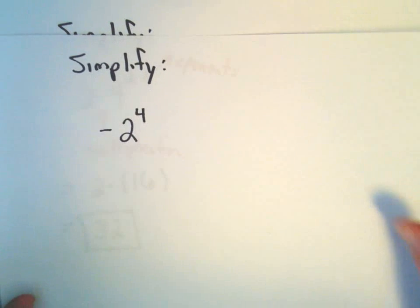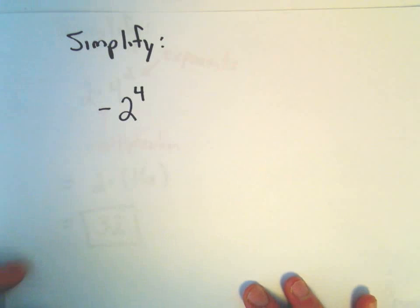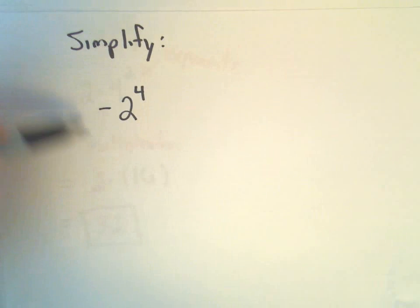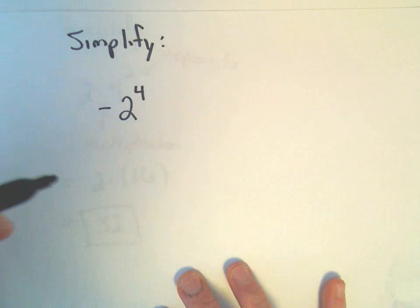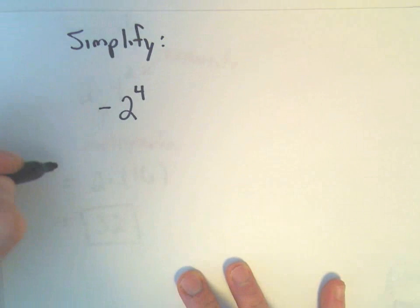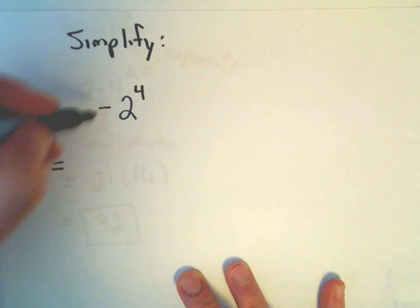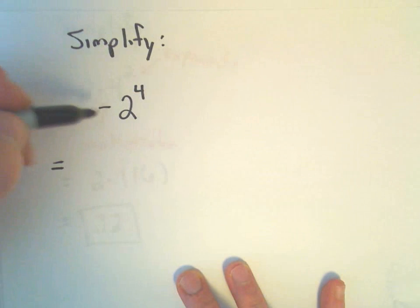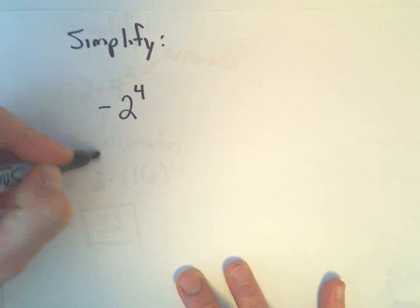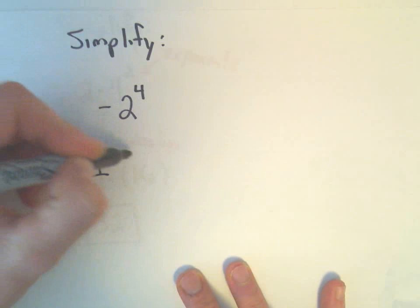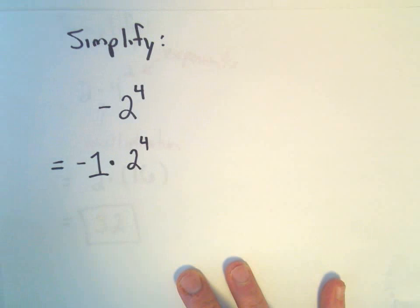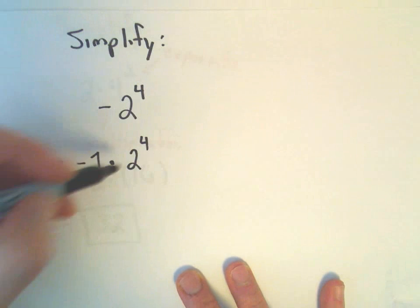Let's look at the next one here, negative 2 to the 4th power. And I would say this type of example is certainly one of the ones that people make mistakes on a lot. So let's do it correctly first. When we have a negative, we really mean negative 1 times whatever's over here.